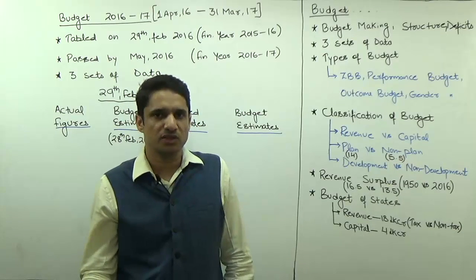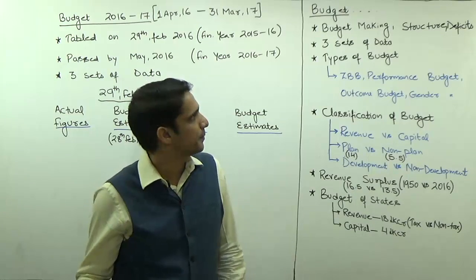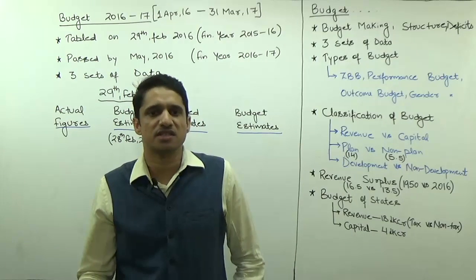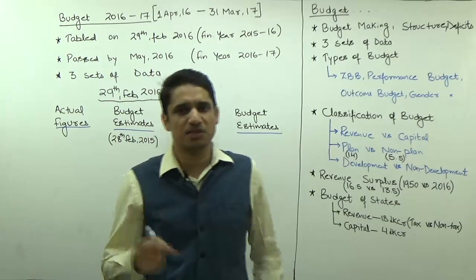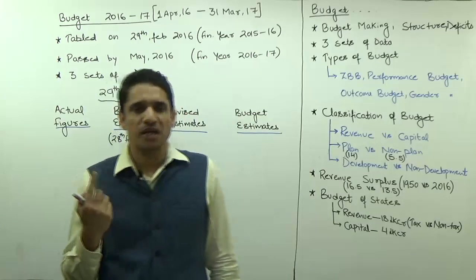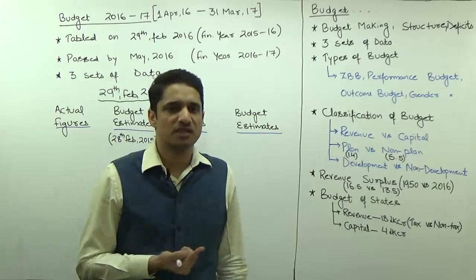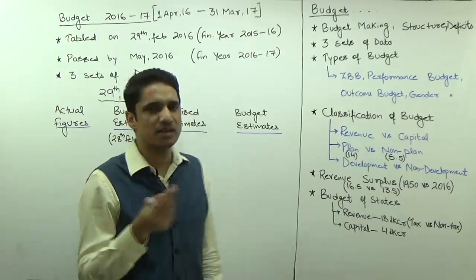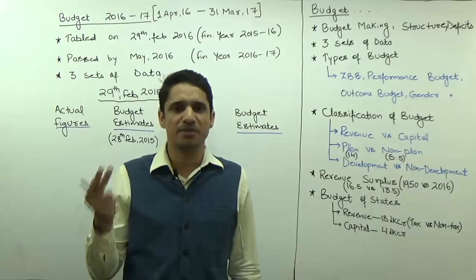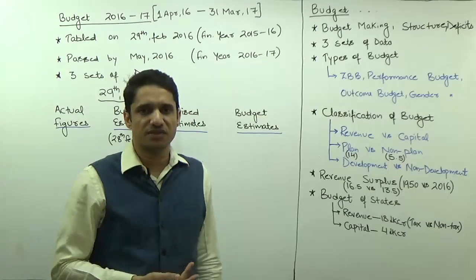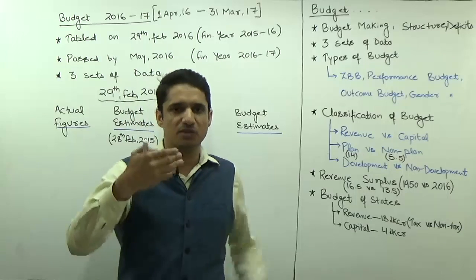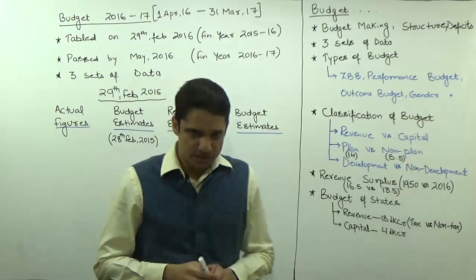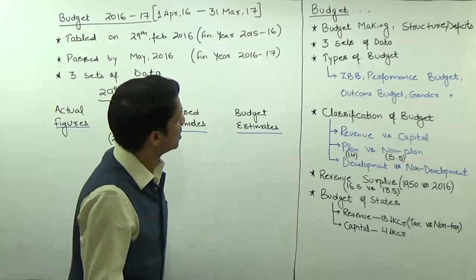We also discussed six types of deficits: budget deficit, revenue deficit, effective revenue deficit, fiscal deficit, primary deficit, and monetized deficit. We discussed that budget deficit and monetized deficit have a value of zero. All these topics have been covered in the continuation of the unit on public finance.